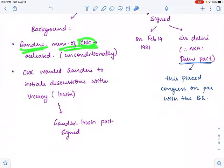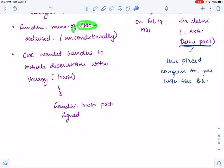Gandhi and many members of Congress working committee were put in prison during the civil disobedience movement. Now Gandhi and the members of the Congress working committee were released unconditionally, that is there was no condition for their release. These members of CWC, that is the Congress working committee, wanted Gandhi to initiate talks with the Viceroy Irwin, and these discussions between Gandhi and the Viceroy Irwin led to the Gandhi-Irwin pact.